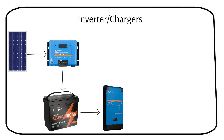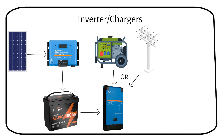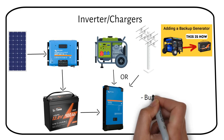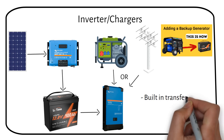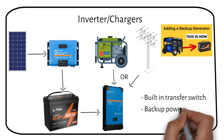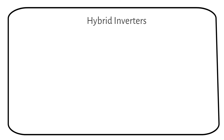An inverter charger is a device that combines the capabilities of an off-grid inverter with a battery charger, streamlining the process of converting and managing power in various settings. While not all models have this feature, some inverter chargers can connect to the grid or a generator to recharge batteries. Inverter chargers are especially favored in RVs, allowing for easy connection to shore power. One significant advantage of using an inverter charger is its built-in transfer switch — this feature enables the device to automatically detect power outages and switch to battery power, ensuring an uninterrupted power supply. The speaker uses an inverter charger at home as a reliable backup power solution.